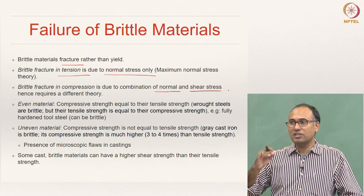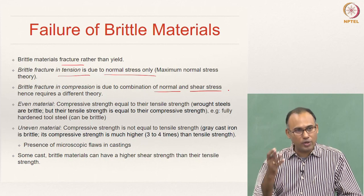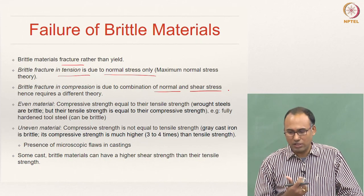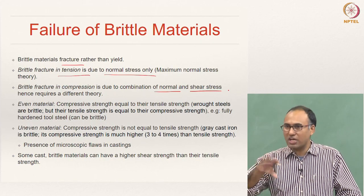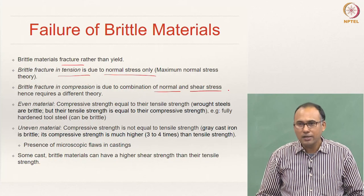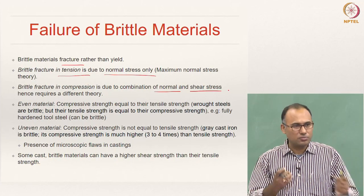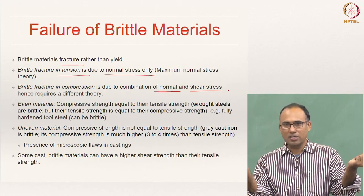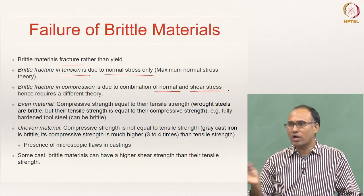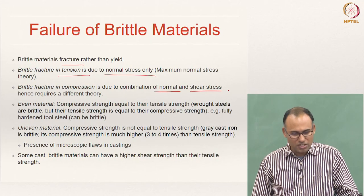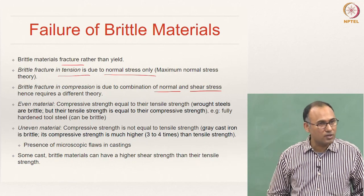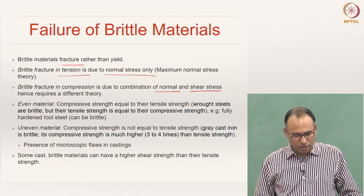In compression, brittle materials fail due to a combination of normal and shear stresses. So that is the difference — they are not failing by the same phenomena when you apply tensile load versus compressive load. In compression, both shear and normal come into play, whereas in tension they simply fail by fracture because you can open up the cracks. In compression, crack opening is not possible. Hence you cannot use the same failure theory for both normal and compressive loading scenarios.